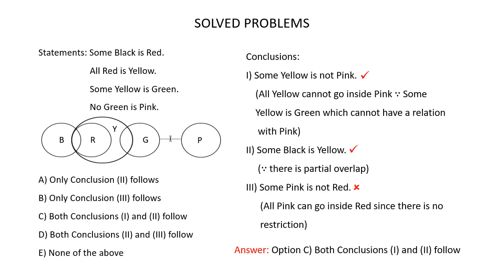In this question, you are given 4 statements and 3 conclusions. Let's find out which of these conclusions follow from the logic given in the statements. The statements are: Some black is red, all red is yellow, some yellow is green, no green is pink. Let's draw a Venn diagram for these statements.